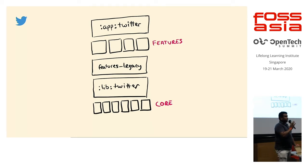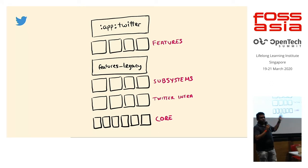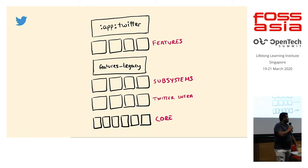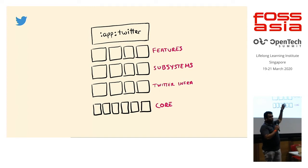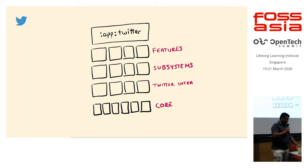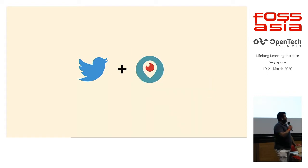We went even further and started splitting up each one of the features. As new teams onboarded and more engineers worked on different features, they wanted to maintain their own module. We realized the benefits of that, started splitting up all the lower-level business logic and Twitter-related subsystems, and essentially ended up with an app that was a lot of different modules supporting each other, with features, infrastructure subsystems, and core logging.